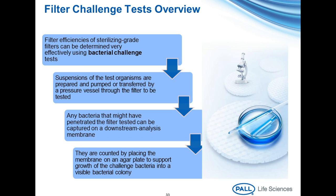Filter efficiencies are evaluated using a bacterial challenge test. Suspensions of test bacteria are pumped or pushed through a test filter, immediately followed by passage through a secondary analysis filter, which serves to capture any bacteria that managed to pass through the test filter. The analysis filter is then directly plated on culture media. In this way, the entire effluent is analyzed for the presence of bacteria, and passage of even a single bacterium—measured as colony-forming units—would indicate a failure of that bacterial challenge test.